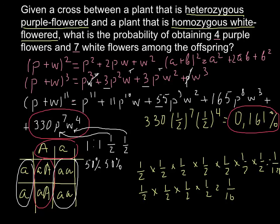I hope my explanation was clear enough. Now you will be able to use this formula to calculate many other probability problems when a specific order of progeny is not specified. Please write your comments, subscribe to my channel. Goodbye!